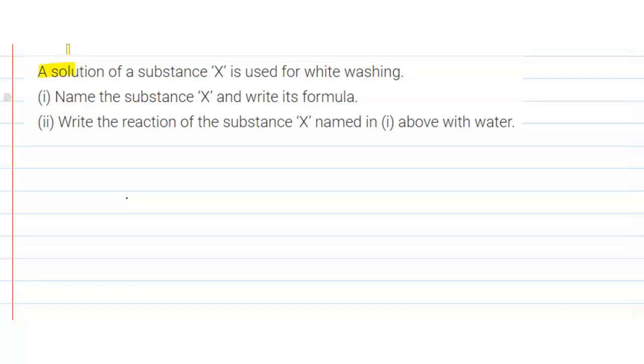Hello everyone, the question says that the solution of substance X is used for whitewashing. So in part (i) we have to name the substance X and write its formula. The substance whose solution in water is used for whitewashing is known as calcium oxide.